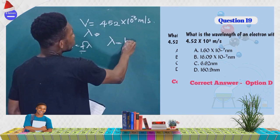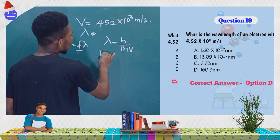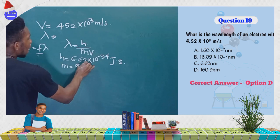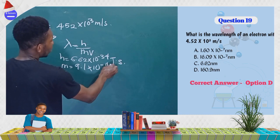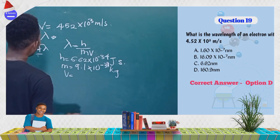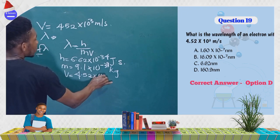Instead, use the de Broglie formula: λ = h / mv. Here h is Planck's constant, 6.62 × 10⁻³⁴ J·s; m is the mass of the electron, 9.1 × 10⁻³¹ kg; and v is the given velocity, 4.52 × 10³ m/s.